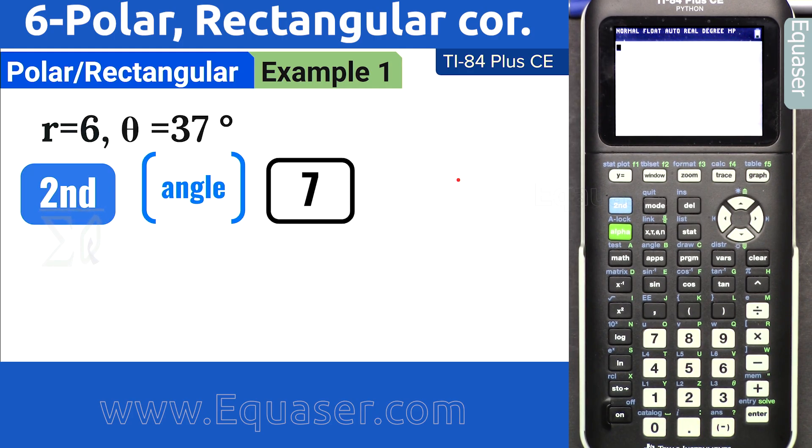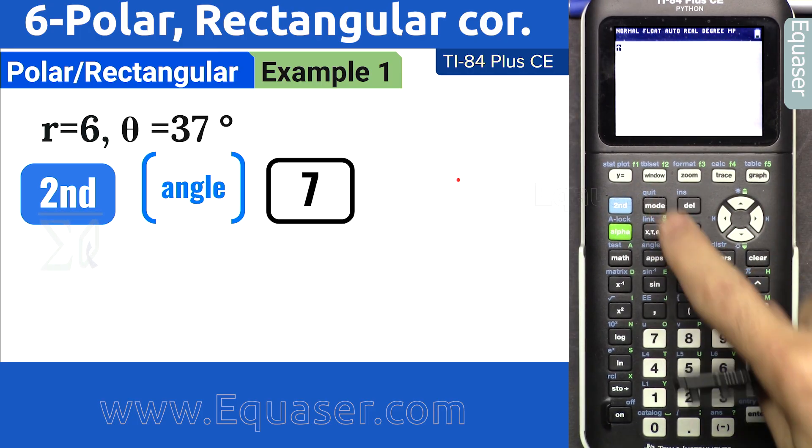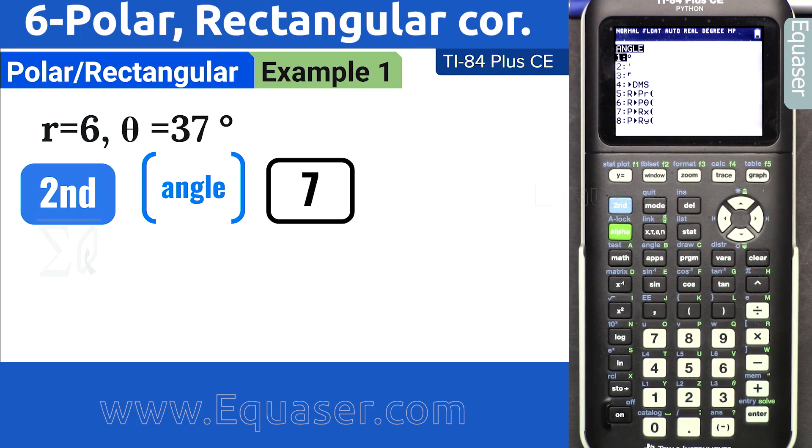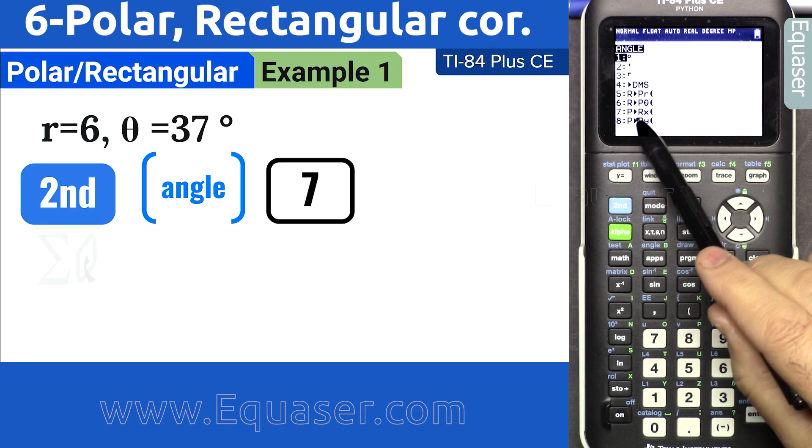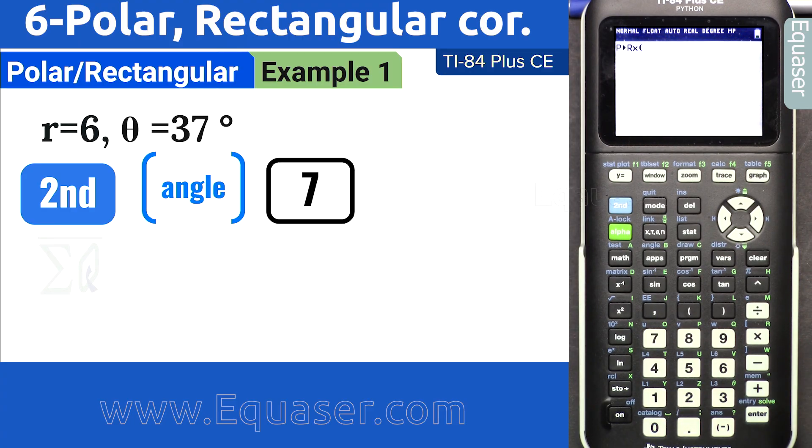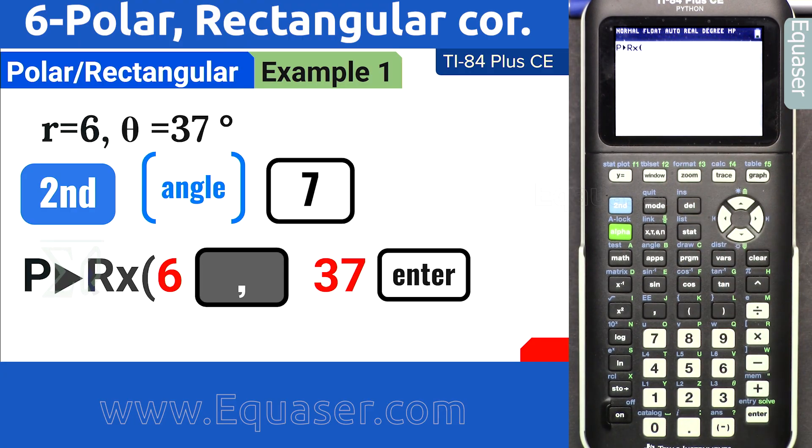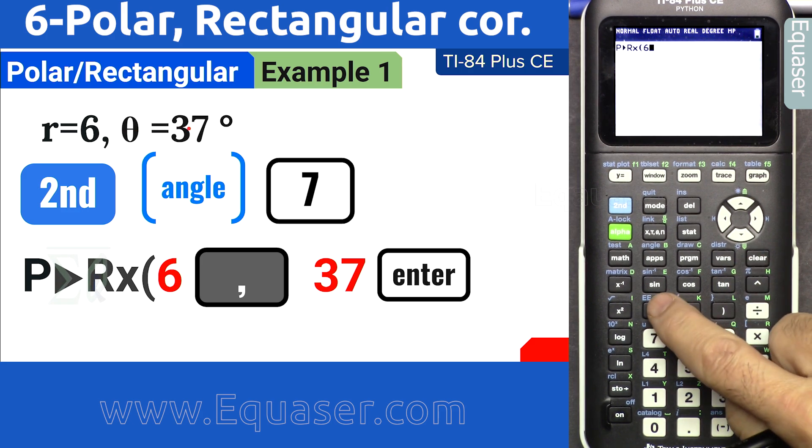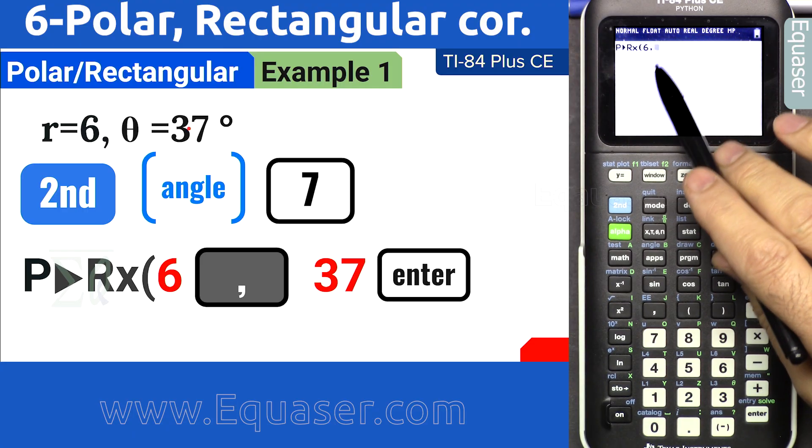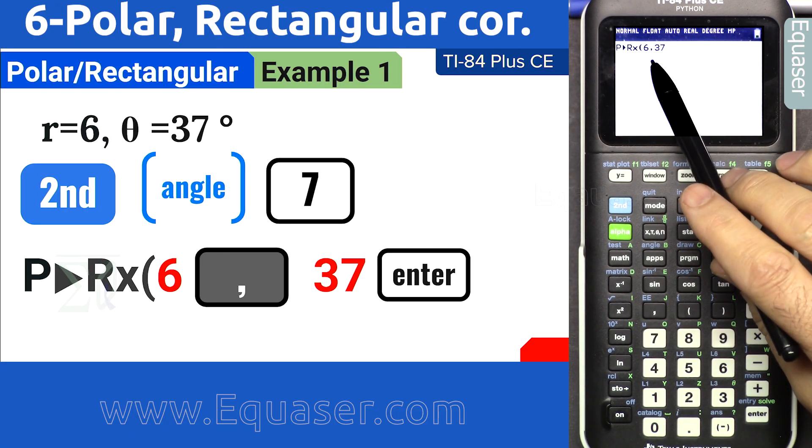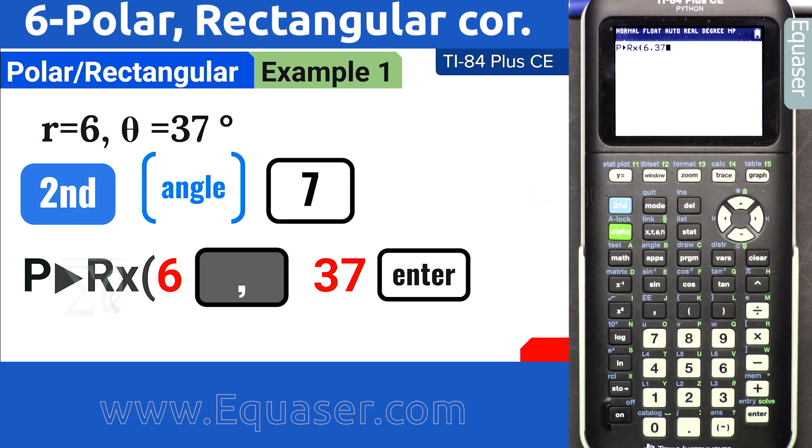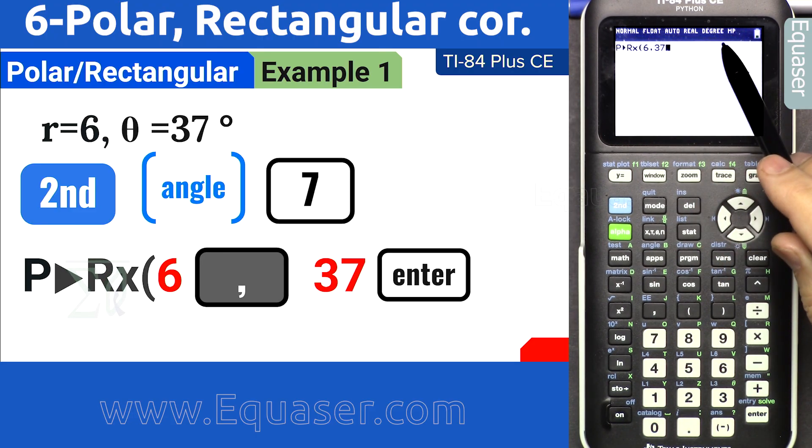To get started with that, press second function and then angle. Here we have the value. It is polar when we want rectangular x. Press 7. We see this on the screen and we enter the r and then theta: 6, and then comma. We have to separate them with comma, and then 37. Remember, we are assuming this is degree.